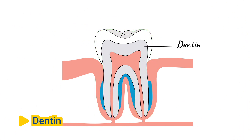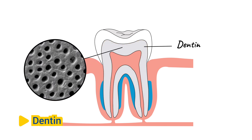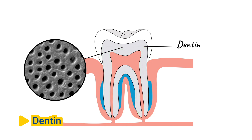Dentin. Beneath the enamel lies the dentin, which makes up the bulk of the tooth's structure. Dentin is not as hard as enamel but is still quite durable. It consists of microscopic tubules that contain nerve endings, making it sensitive to stimuli such as temperature changes and pressure. Dentin provides support to the enamel and helps protect the inner pulp of the tooth.